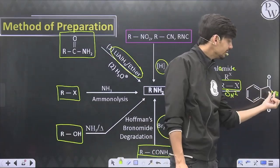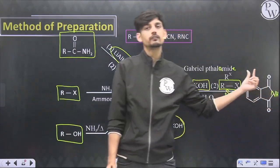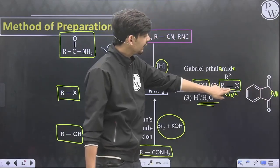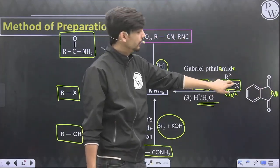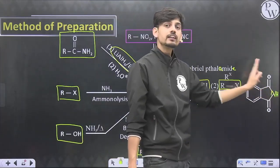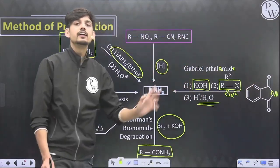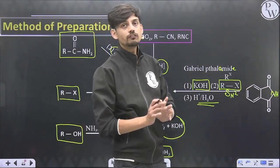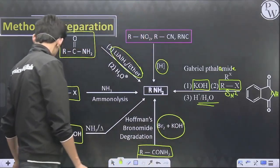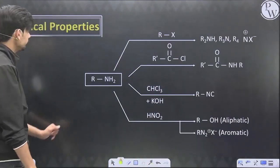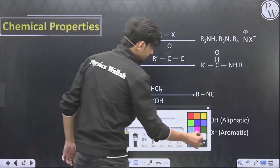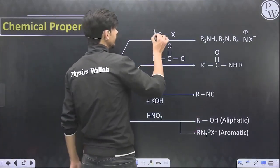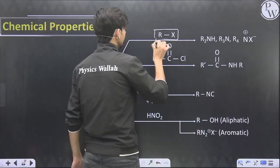Note the difference: in LiAlH4 reduction the number of carbon atoms remains unchanged, but in Hofmann bromamide degradation (using bromine and base) the carbon atom count is reduced — that's why it is called a degradation reaction. In the Gabriel phthalimide synthesis, phthalimide reacts with base, then alkyl halide (SN2), then hydrolysis to give a primary amine. Gabriel phthalimide can only give primary amines because nitrogen has only one hydrogen to be replaced.